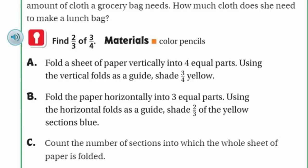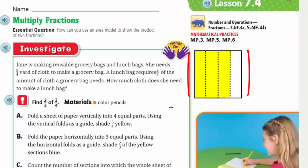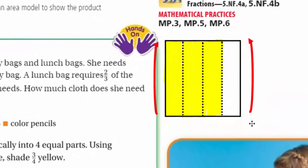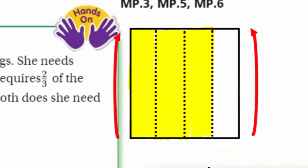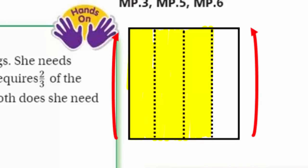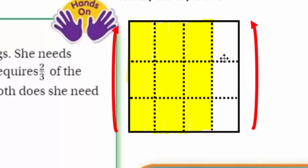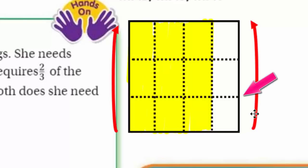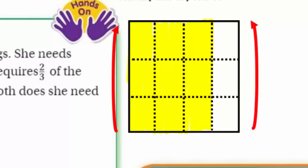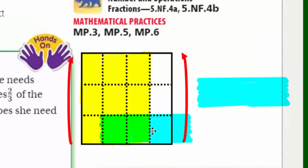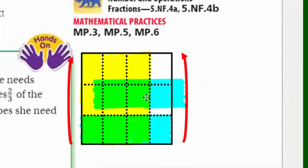B says fold the paper horizontally into three equal parts. Unlike before when we were folding vertically across, now we're folding in the upward direction — horizontally — going in the opposite direction. It does say to do it into three equal parts. And here I've done those three equal parts with folds here and here. It says shade two-thirds of the yellow sections blue. So I have two sections ready — here's one, and here's number two: two out of three, giving me two-thirds.